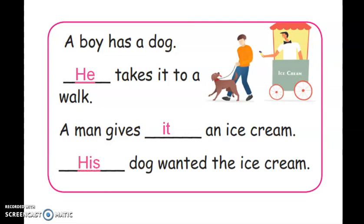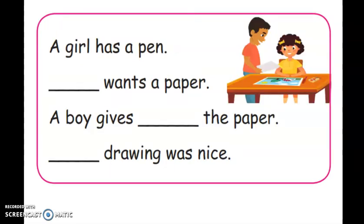His dog wanted the ice cream. A girl has a pen. She wants a paper. The boy gives her the paper. Their drawing was nice. And we have to say two people, so their drawing was nice.